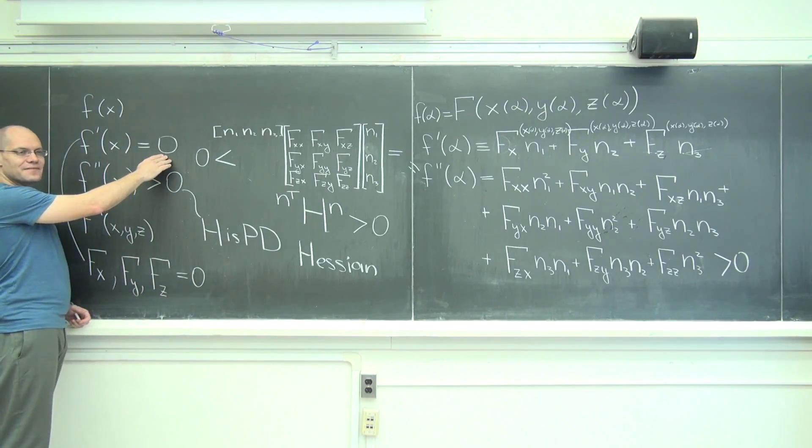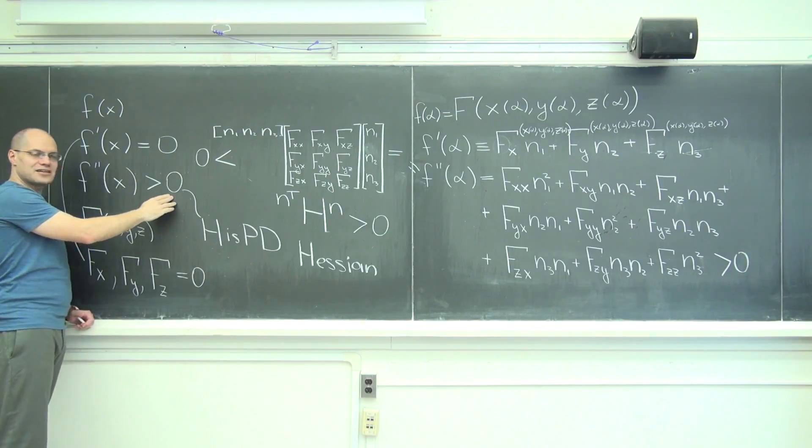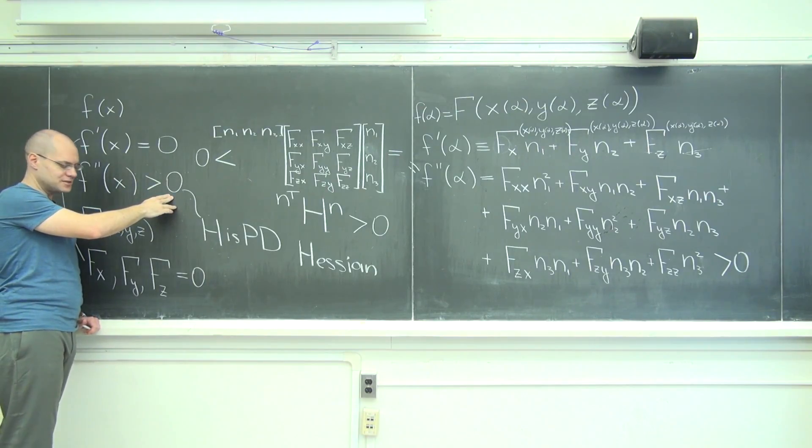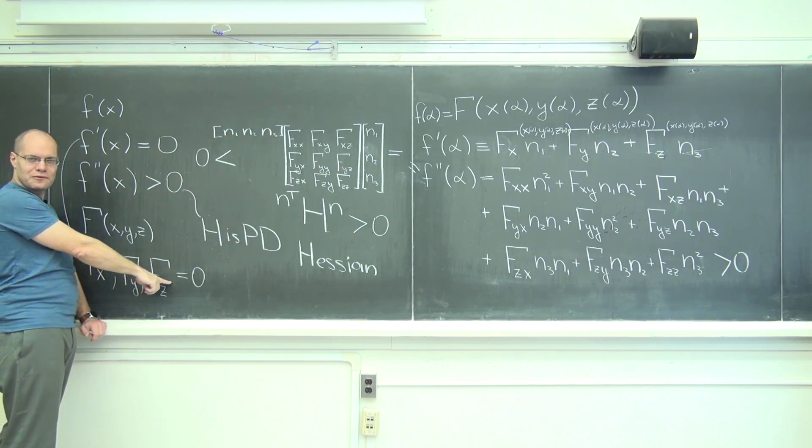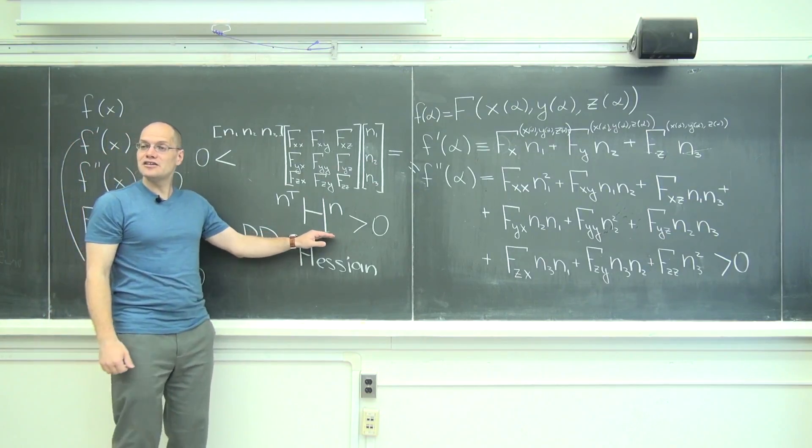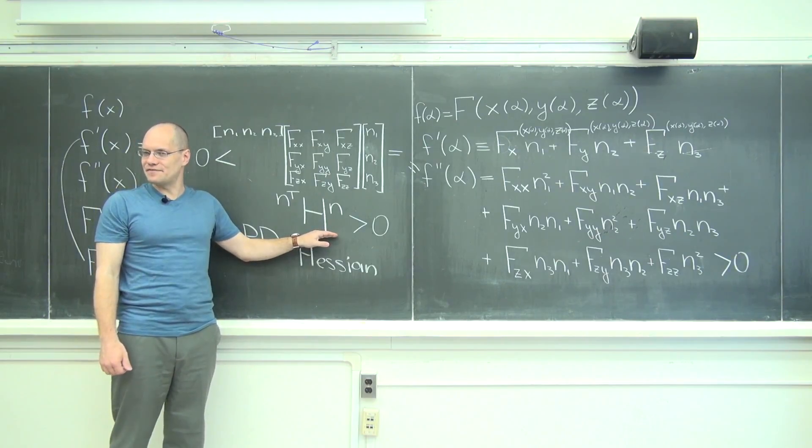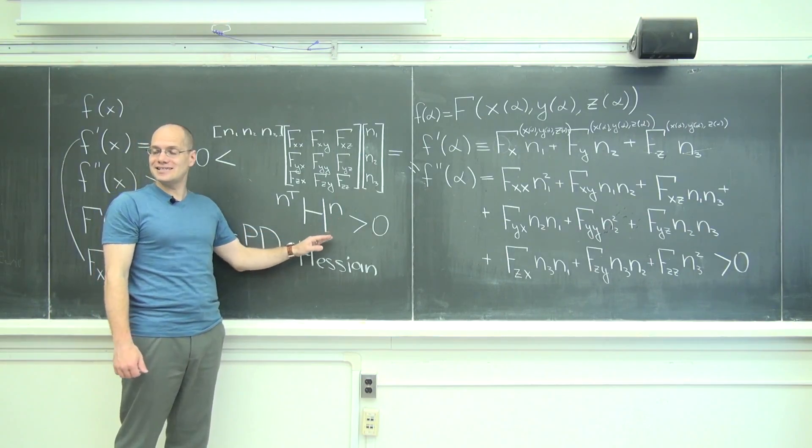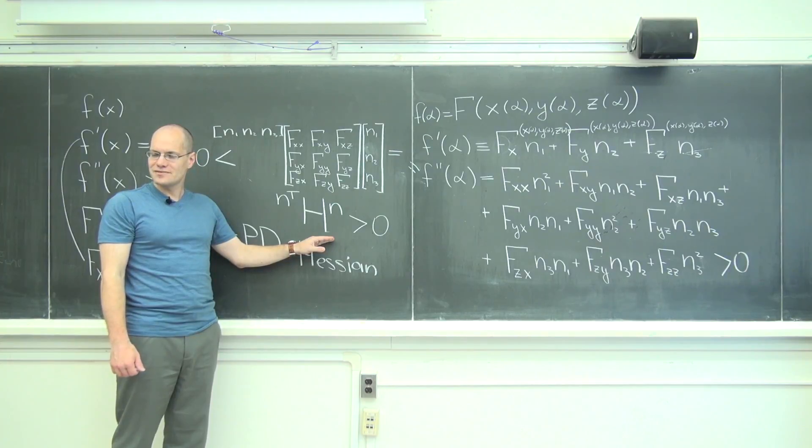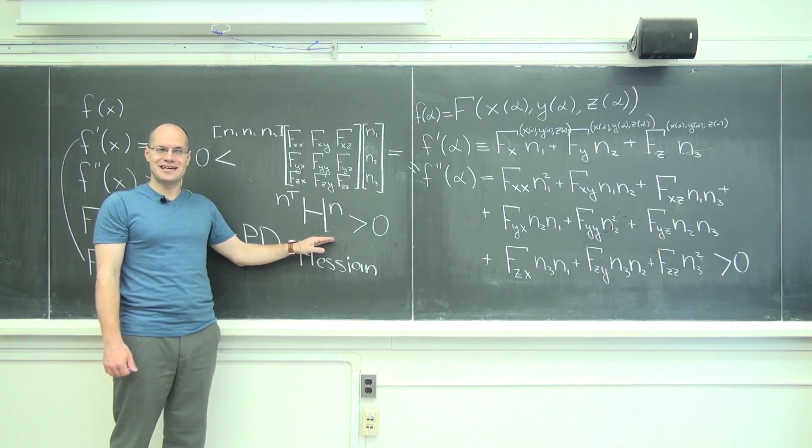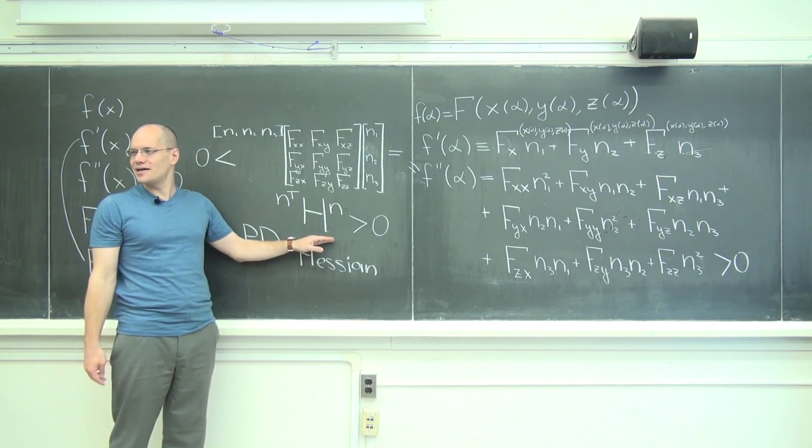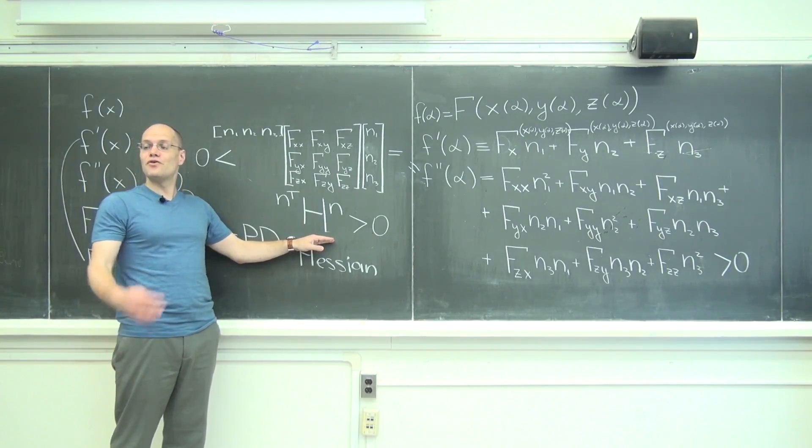So to summarize, the analog of the derivative being equal to zero and the second derivative being positive at that point is all partial derivatives equal zero and the Hessian is positive definite at that point. And negative definite, in other words strictly less than zero, it's called negative definite. We never mentioned that, but you know, it's a simple concept if you know positive definiteness for a maximum.